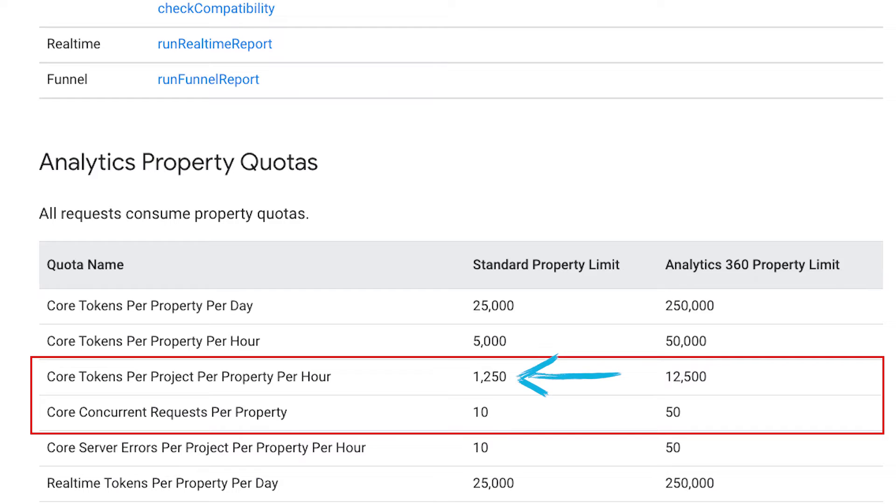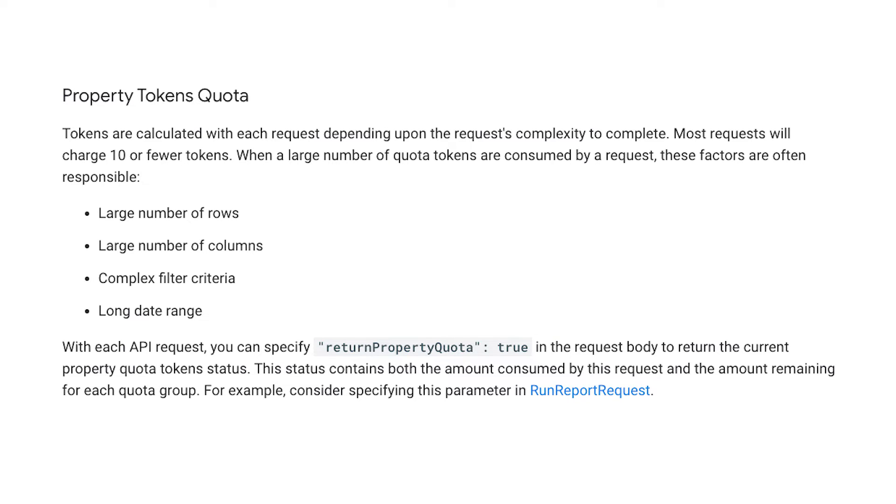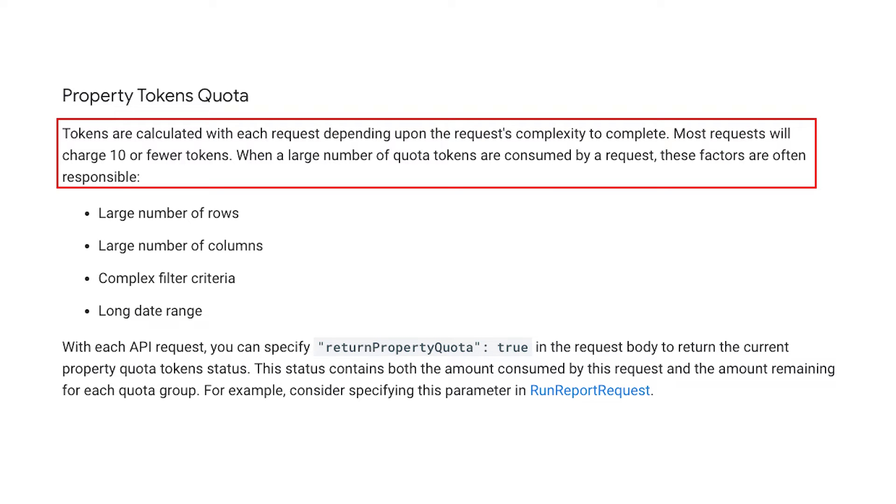This is probably the majority of dedicated GA4 reports. And even if your report doesn't send 10 or more concurrent requests, you could then fall foul of the second limit of 1,250 core tokens per project per property per hour. Each widget query or request also represents a different number of tokens. Google explains that tokens are calculated with each request depending on the request's complexity. Most requests will charge 10 or fewer tokens. If you have a dashboard with 10 widgets averaging 8 tokens each, 80 tokens are used when you simply load the dashboard — apply a filter control, another 80. So you can see how it might be fairly easy to reach the token limit.